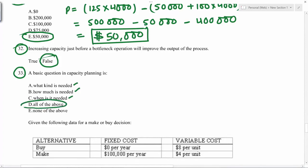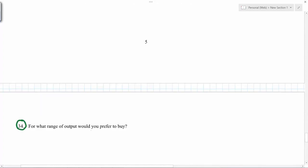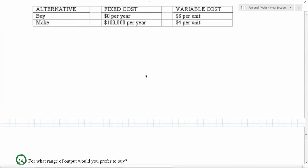So all of the above. For what range of output would you prefer to buy? So let's say our break even for profit will be revenue times quantity minus you have the fixed cost for the buy decision plus the variable cost for the buy decision times quantity.